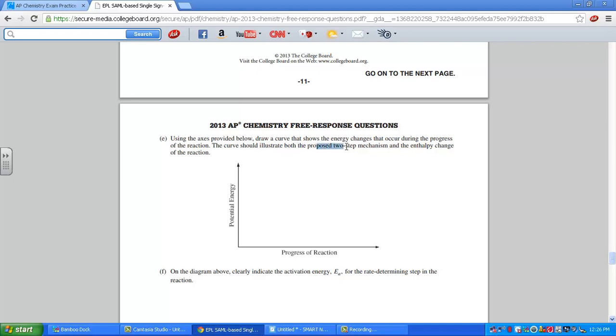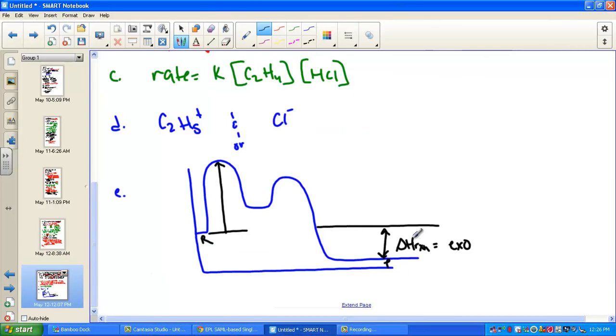Keep in mind what this was asking. I'll go back and just kind of show the other part of this quickly. The curve illustrated both the proposed two-step mechanism and the enthalpy change of the reaction. And then be sure to clearly indicate the activation energy for the rate determining step. We're kind of putting E and F all together there. So overall we showed the reaction was exothermic.